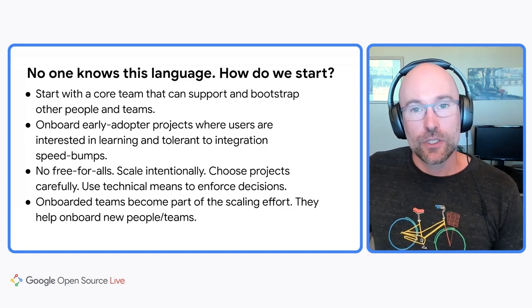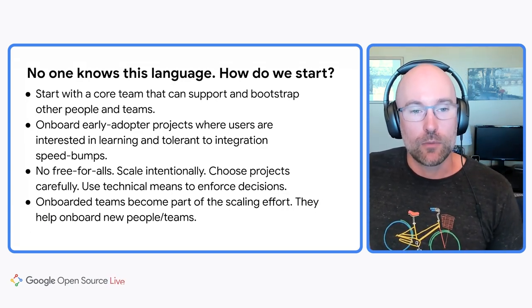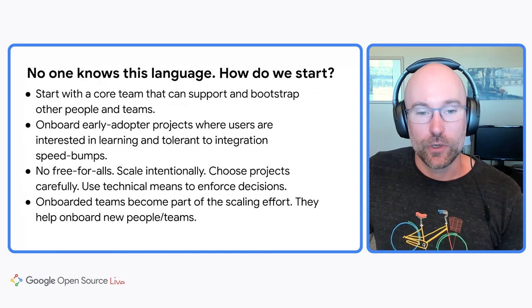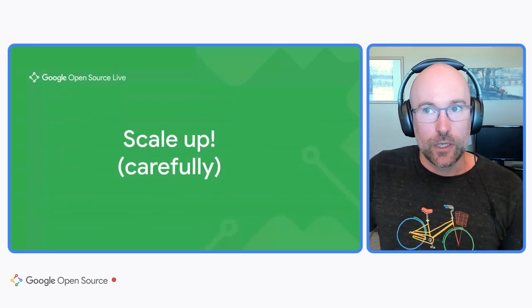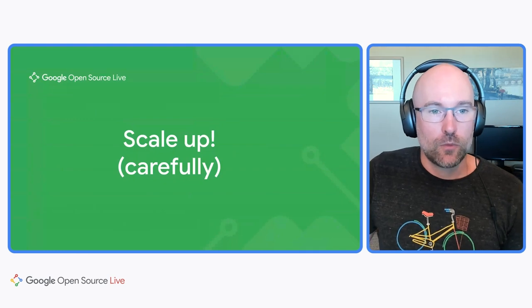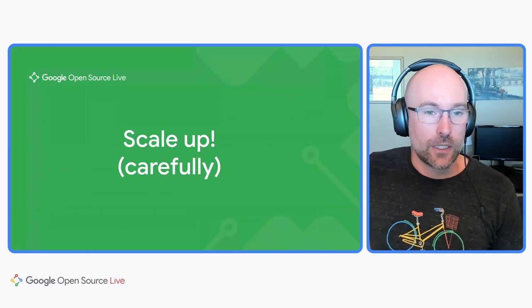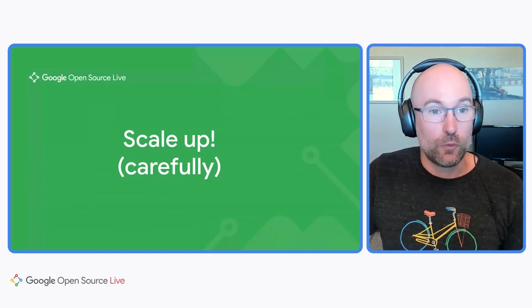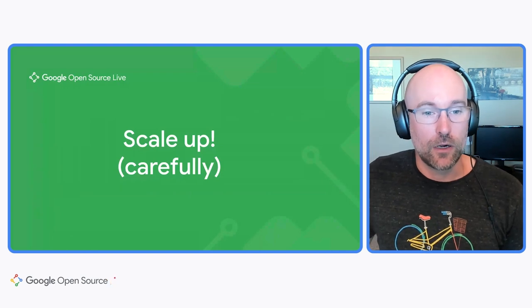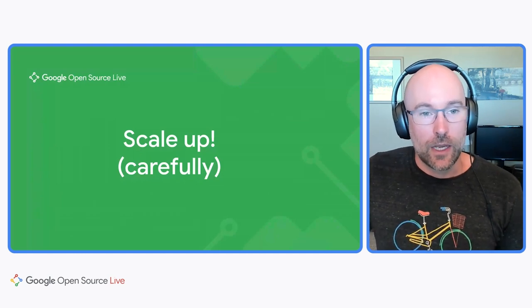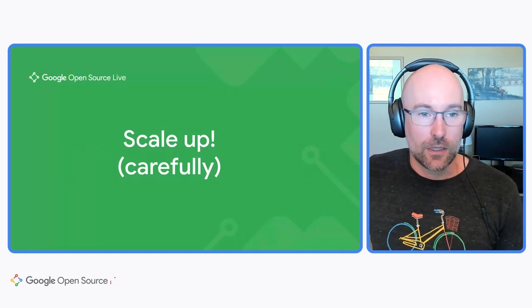As you're scaling, the people and teams you've onboarded become part of the scaling effort — they in turn help onboard new teams and people. We continue to scale up, with new teams onboarding and new projects launching within Android using Rust. We recently hit an exciting milestone where we removed those technical restrictions — now any team working on the Android Open Source Project is allowed to use Rust.